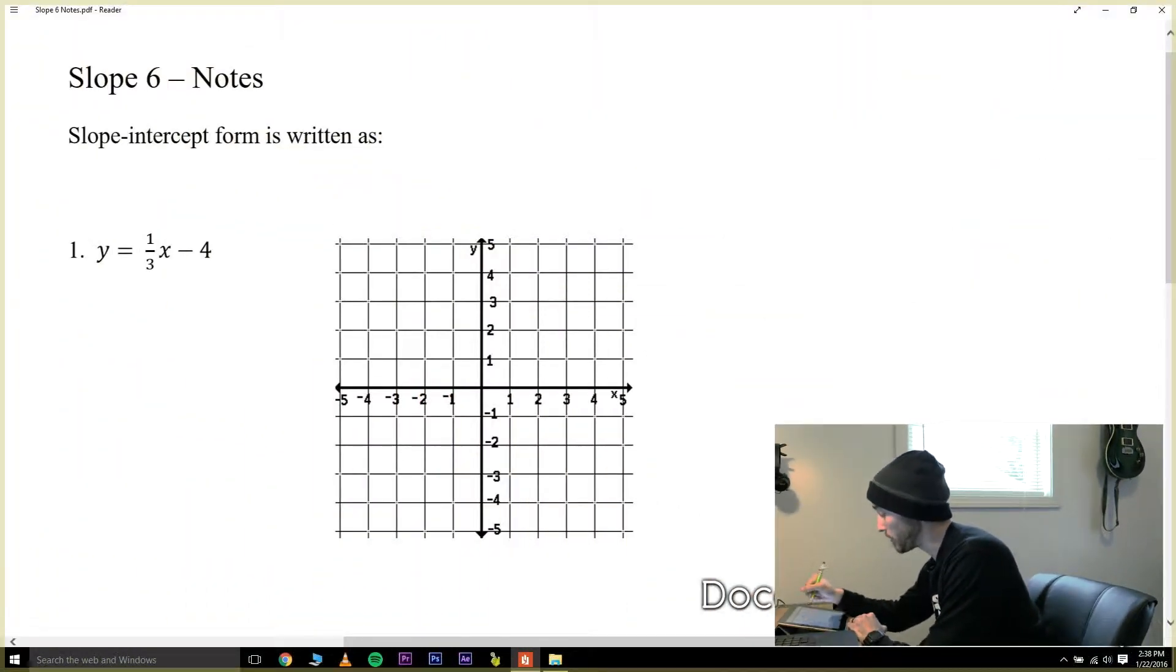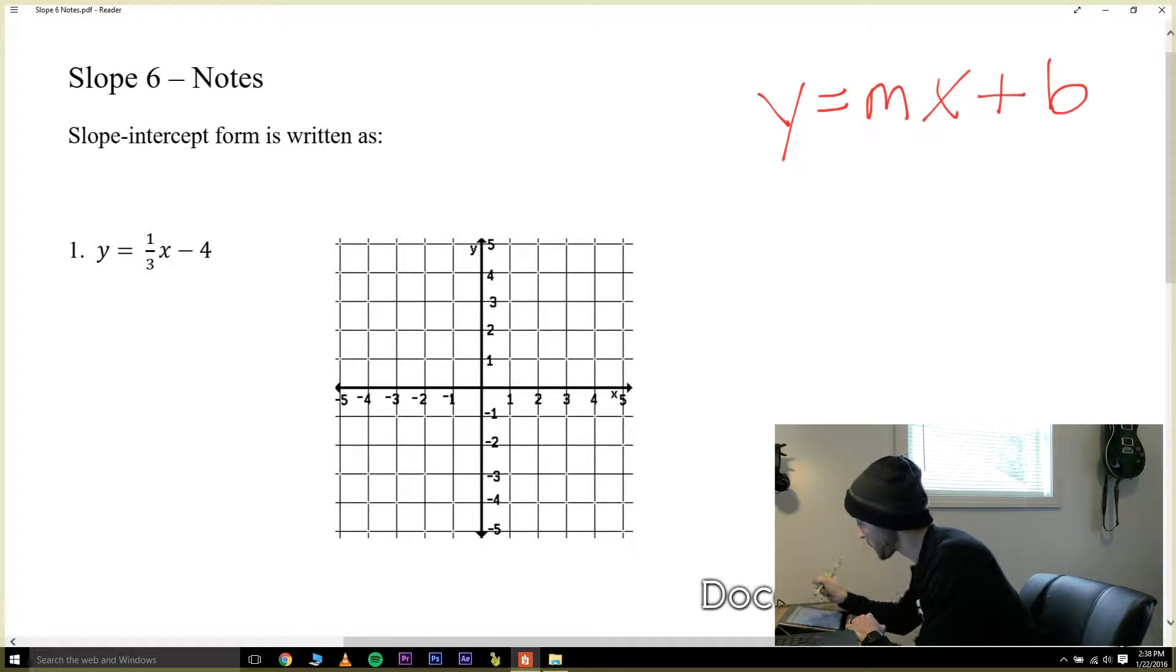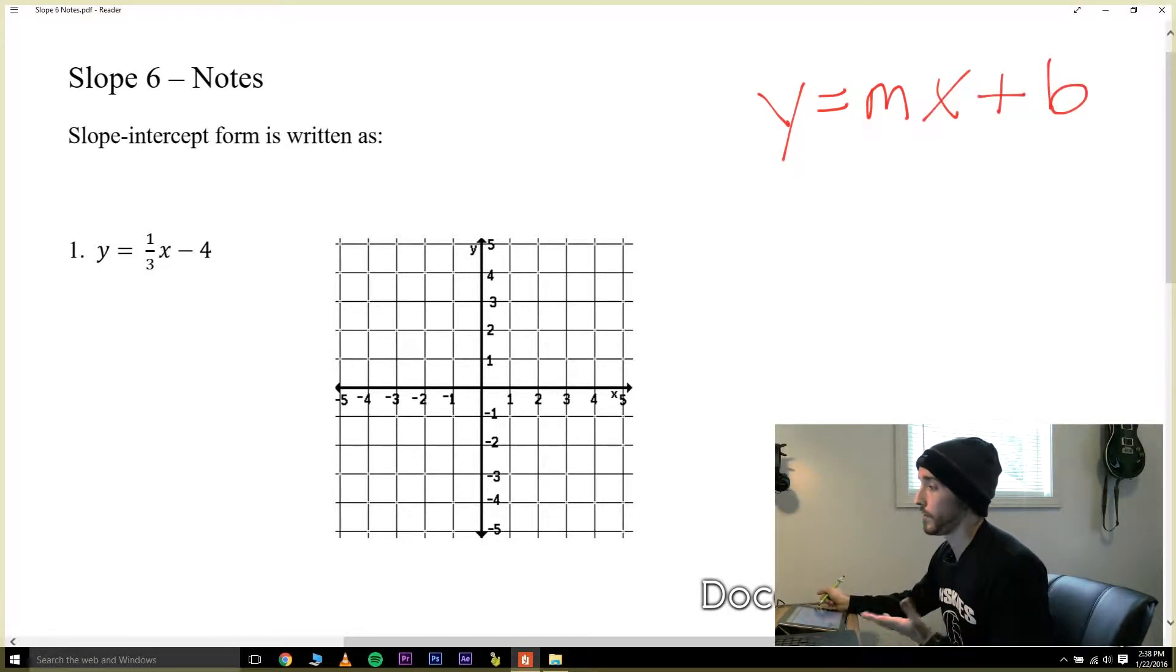Today we're going to be taking a look at slope intercept form. So if you're taking notes with me, let's go over on the right-hand side of the paper within the blank space and let's write down slope intercept form, which is y equals mx plus b. Let me explain what this means.